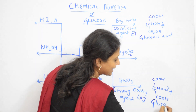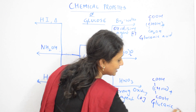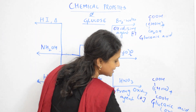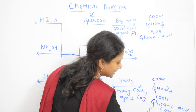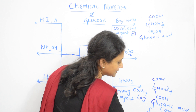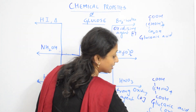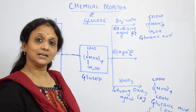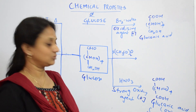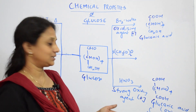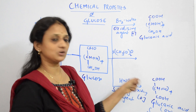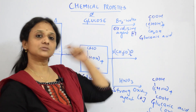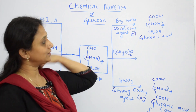The product with two carboxylic groups on both sides is named glucaric acid, also called saccharic acid or glycaric acid — all three names refer to the same compound. So saccharic acid means two carboxylic acid groups on both ends, while gluconic acid has only one carboxylic group in place of the aldehyde.